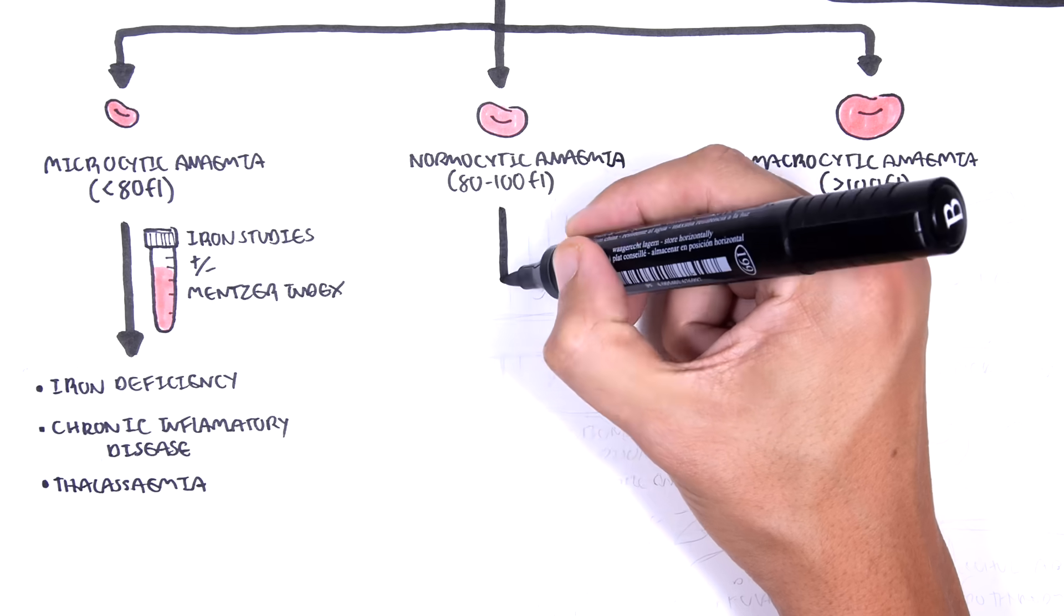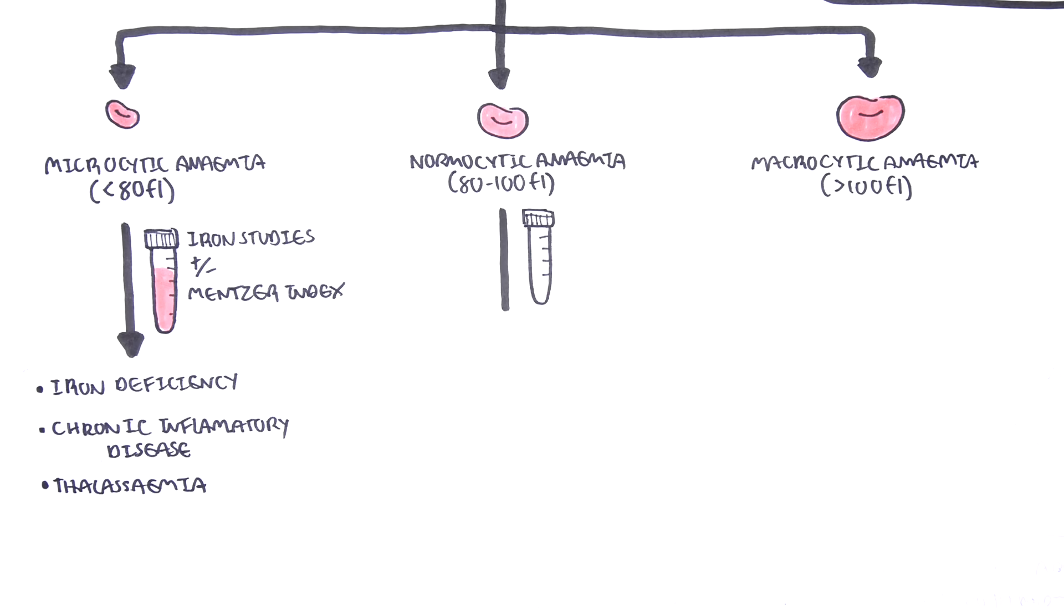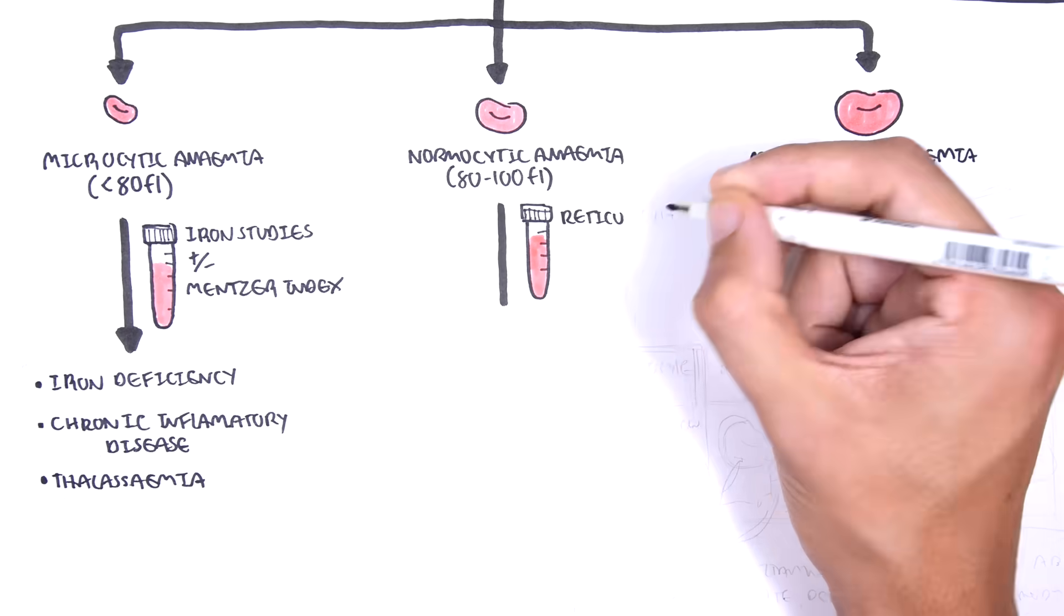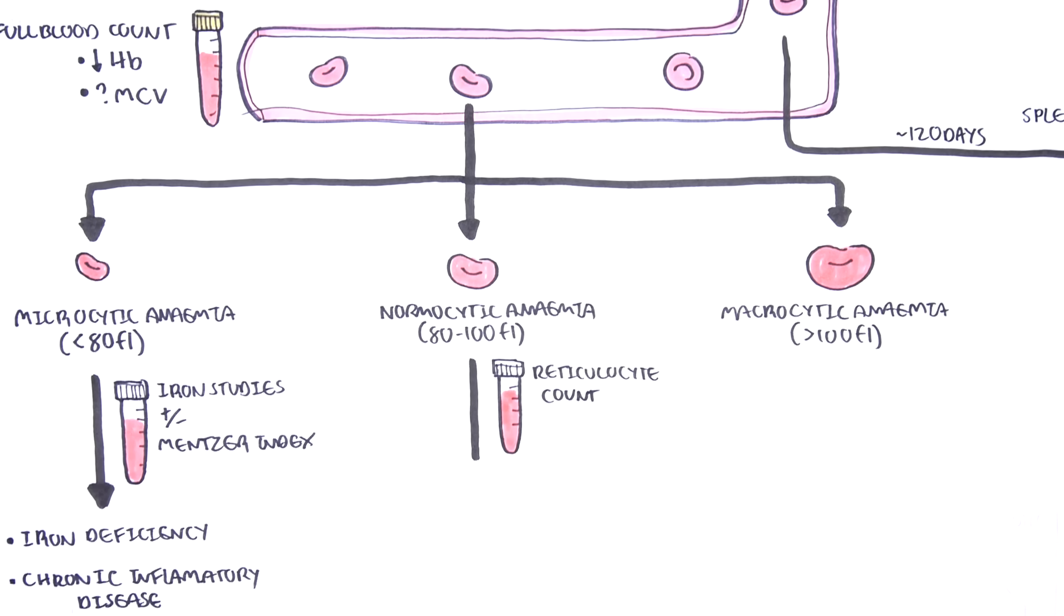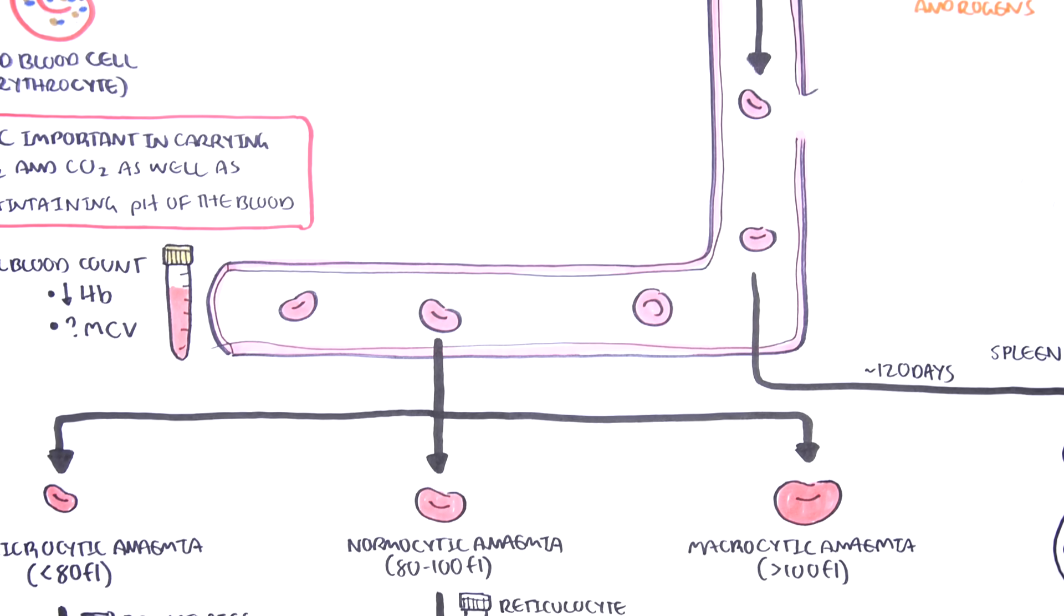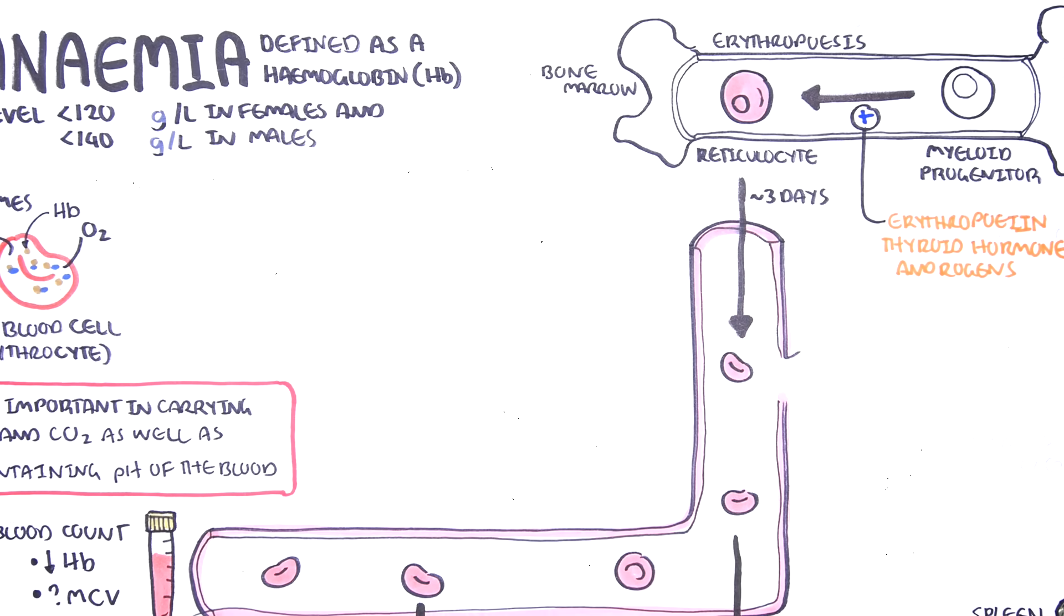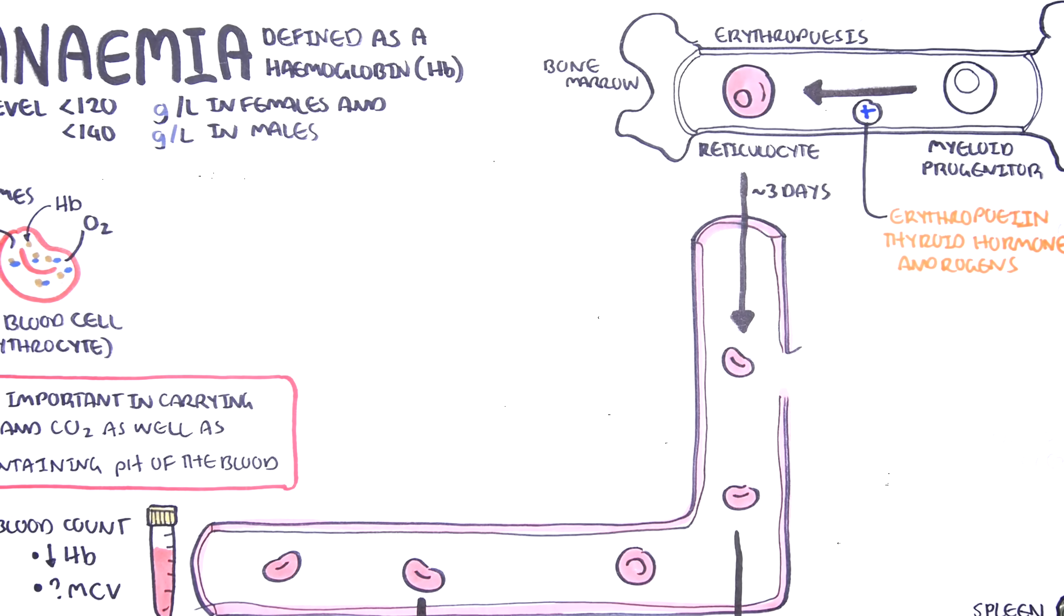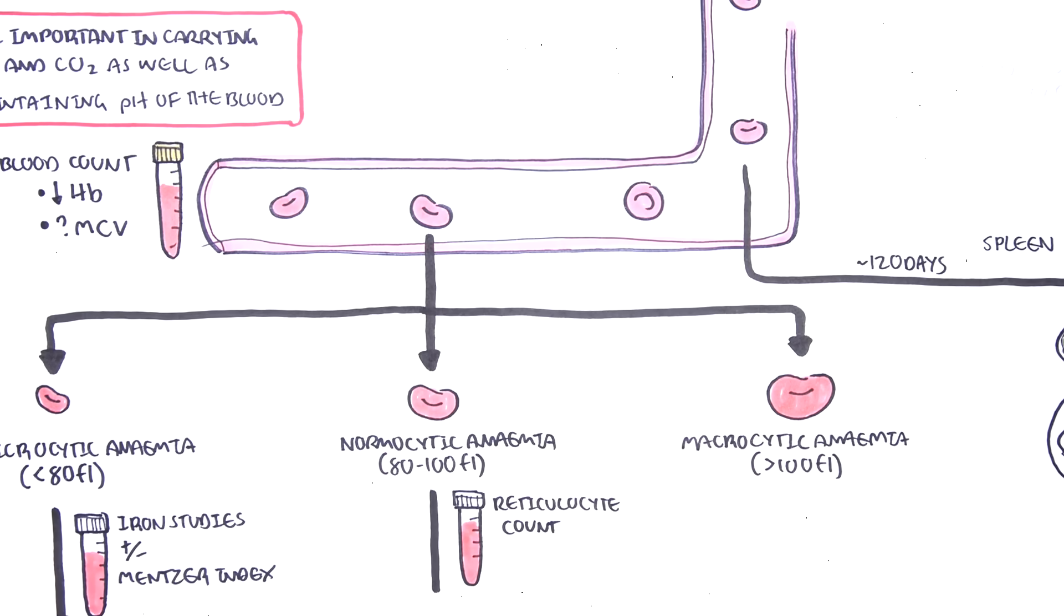When someone with anemia has a normal MCV, a reticulocyte count should be performed. Remember, the reticulocytes are the premature red blood cells that are still in the bone marrow. The reticulocyte count can be either high or it can be low.